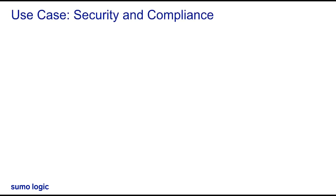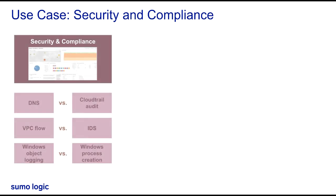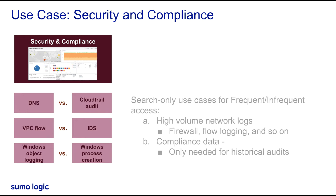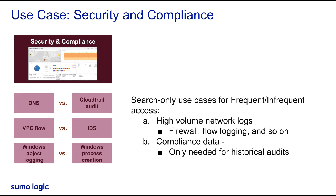In the security and compliance domain, DNS logs are a good example of a high-volume log that we may not necessarily be using day-to-day, unless we're having some sort of a security incident and need to drill in and get additional context. CloudTrail logs, on the other hand, we're probably monitoring pretty frequently to understand who is doing what in our AWS environment. Similar search-only use cases for frequent or infrequent access are listed as an example here.